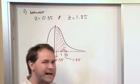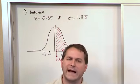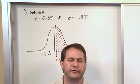And so you might look at this and say, well I don't know how to do that because the table gives us the area to the left. So how do I find the area under the curve between two values?